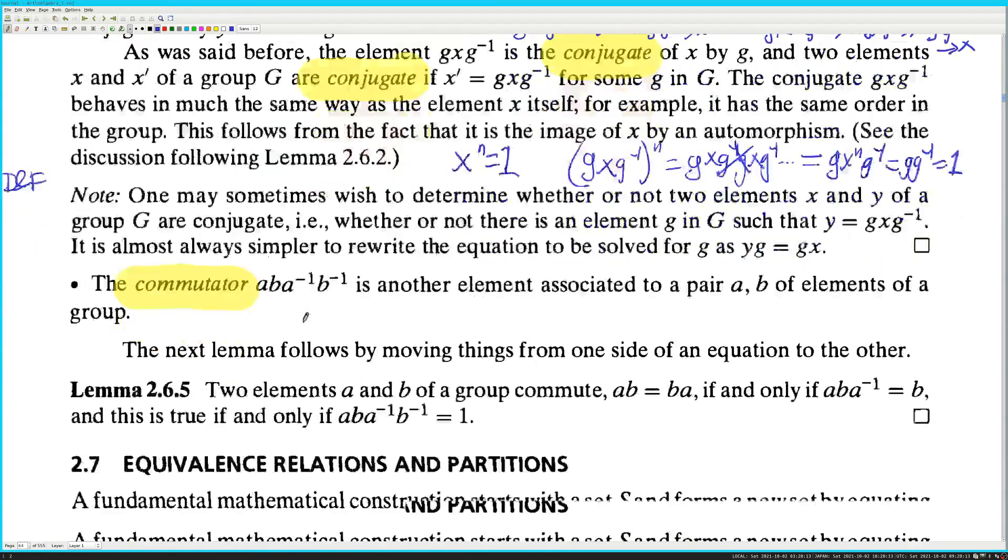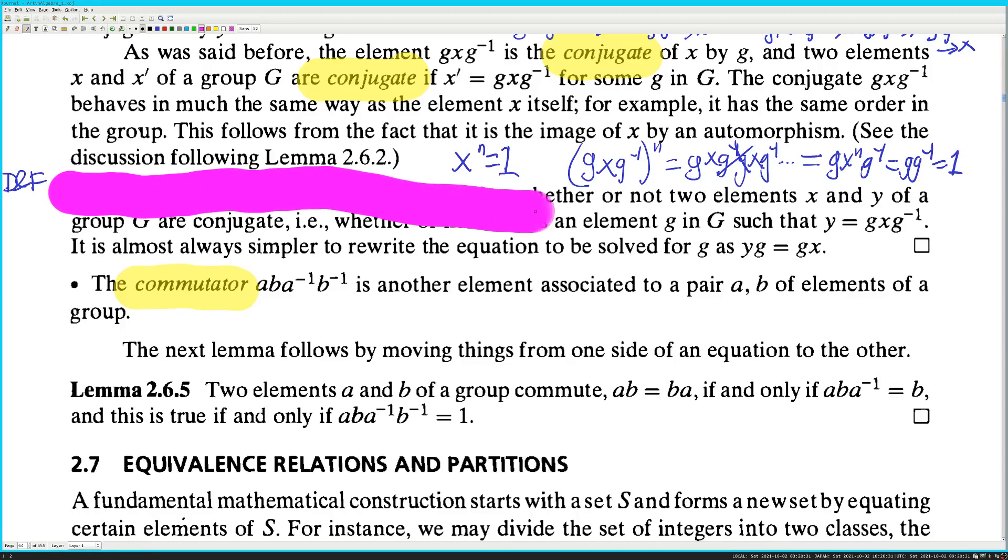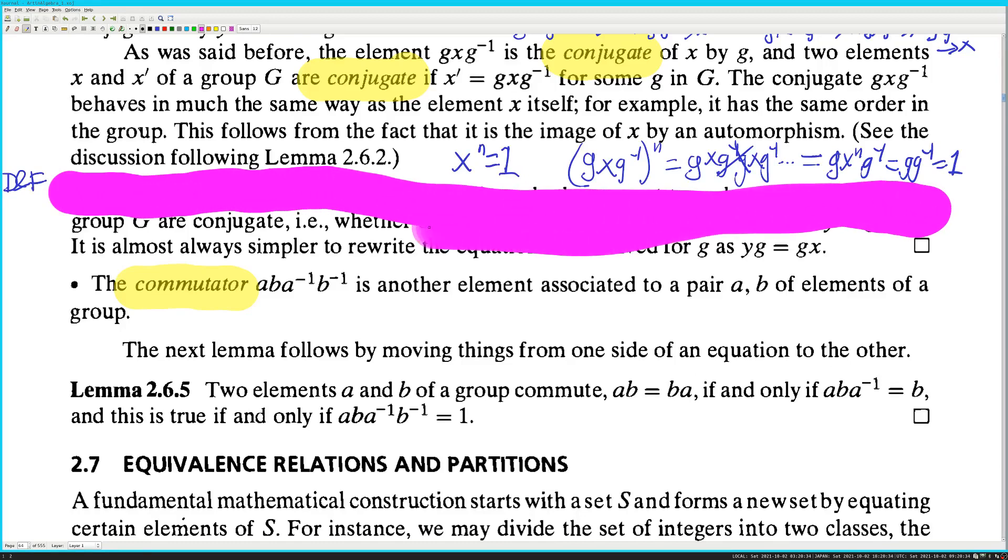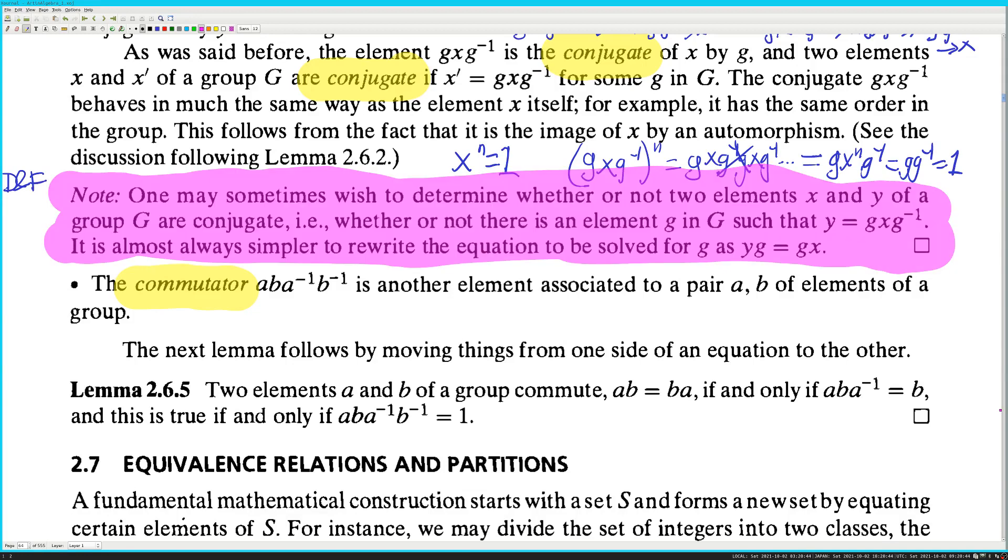So N is the smallest such number. So I can see how that the order of G, X, G inverse is bounded above by N. So I'm going to look into Dummit and Foote. Dummit and Foote, because that book, I think, is a little bit more verbose. Note, one may sometimes wish to determine whether or not two elements, X and Y, of a group G are conjugate, i.e., whether or not there is an element G in G, such that Y is equal to GX, G inverse. It is almost always simpler to rewrite the equation to be solved for G as YG is equal to GX. The commutator. This note seems important. M as in mauve, which is purple. This seems important. Mauve as in important.